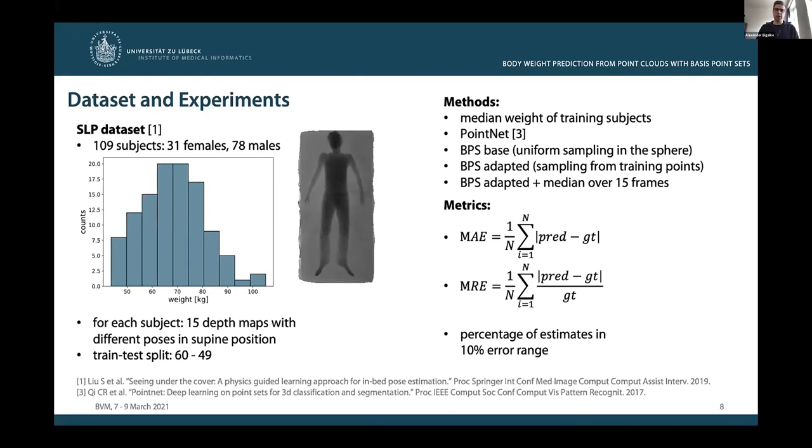For evaluation, we compared the following five methods. As a first baseline, we estimate the weight of a test subject as the median weight of all training subjects of the same gender as the test subject. As a second baseline, we train a PointNet architecture to directly regress the patient's weight from the input point cloud. Beyond, we compare three variants of our proposed method. First, the base version of basis point sets, where the basis points are uniformly sampled in the sphere.